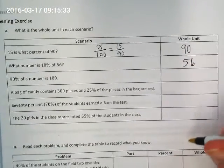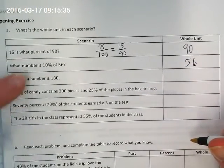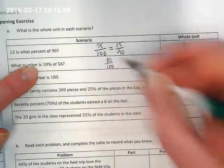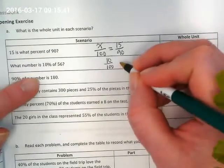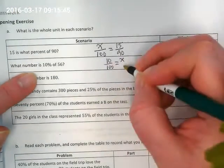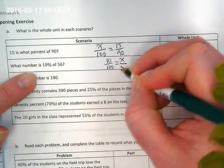Can we set up the proportion for that one? The first ratio would be 10 over 100 for the percent side. We're looking for the number that's the part, but we know that the whole is 56.